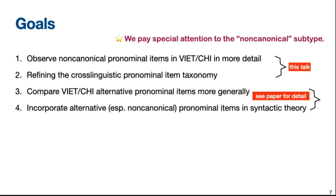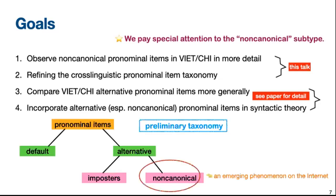Before I hand over to Li, I want to show you a preliminary taxonomy in relation to our second goal. Pronominal items fall in two groups based on how they are used: the default group and the alternative group. And alternative pronominal items fall in two further subtypes: impostors and non-canonical pronominal items. Now I'll hand over to Li to tell you more about what we have found.